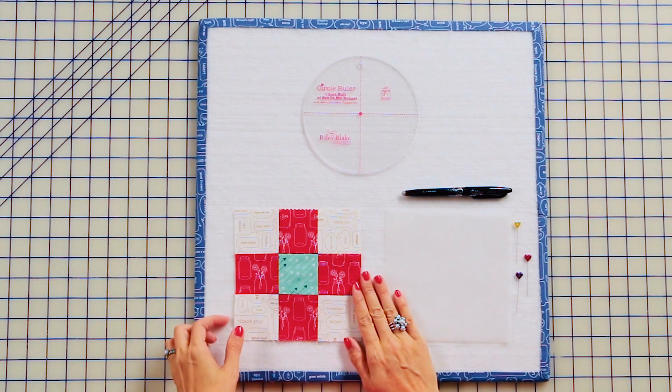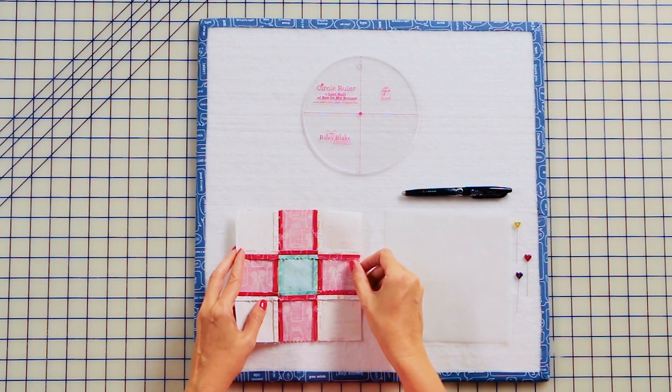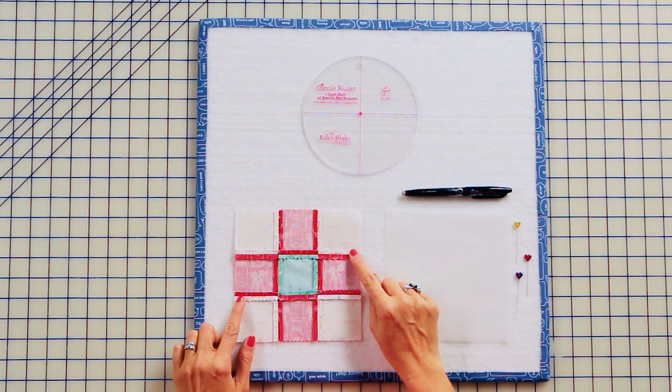Our first step is to make a mama block from page 17 of the Great Granny Squared book. You're going to press all of your seams open, which makes it easier to applique later.